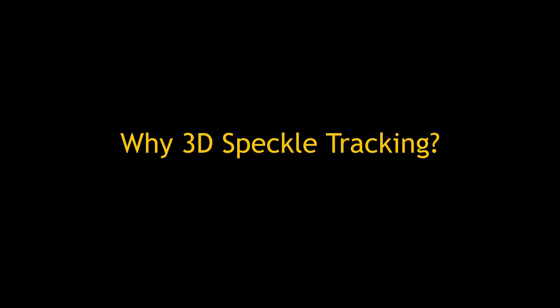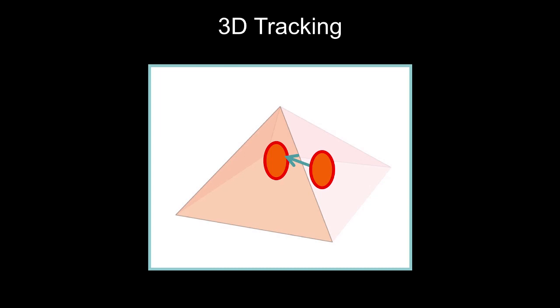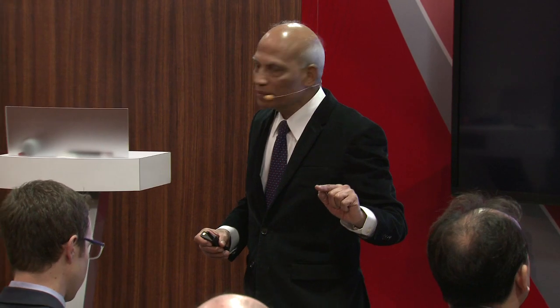That is 2D speckle tracking, but one can also do 3D. The advantage of 3D speckle tracking is that in 2D, whatever region we see in diastole may not be the same region in systole because the heart moves. With 3D speckle tracking, the whole analysis is within a pyramidal volume of 3D data. That does not mean 2D speckle tracking is not useful — in fact it's much easier to do; you put the transducer, push a button, and get the data.